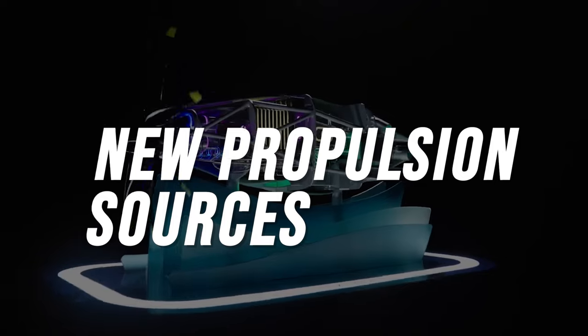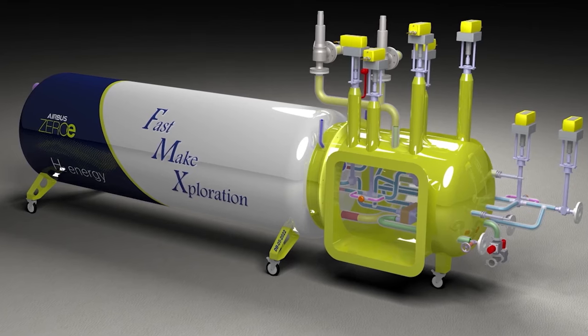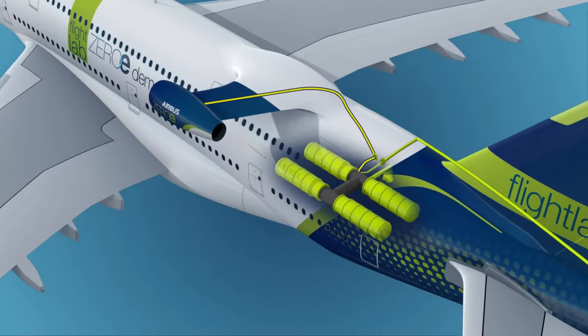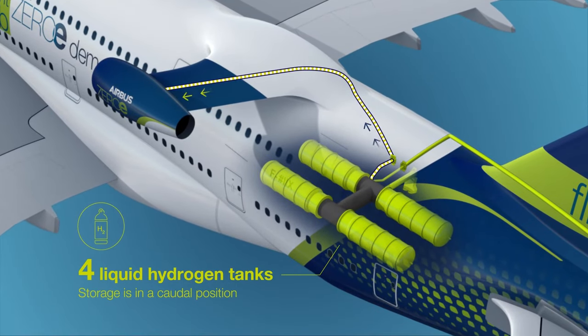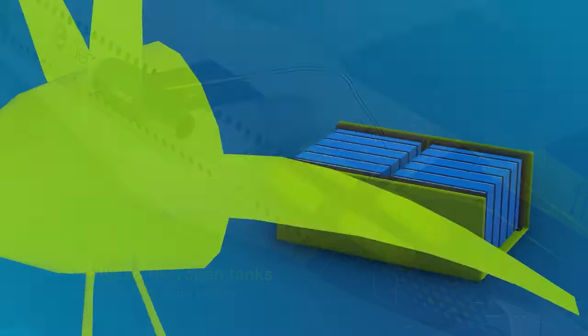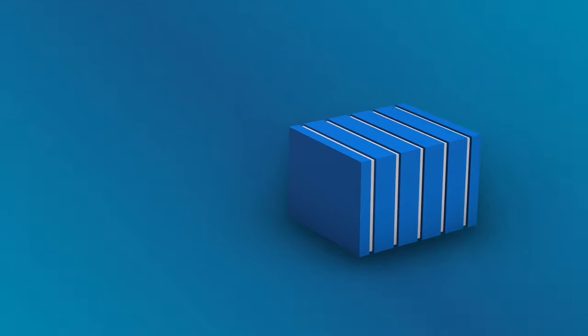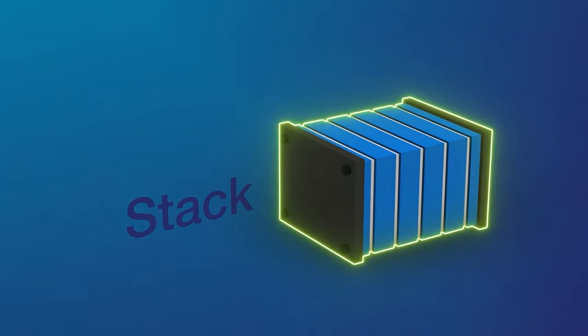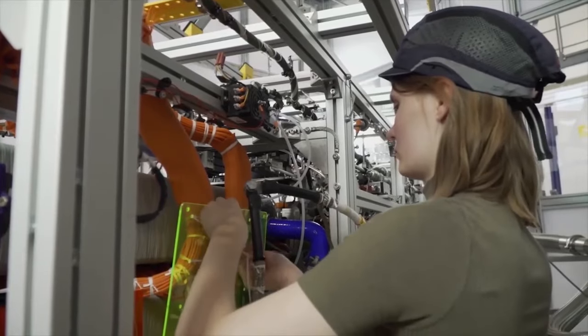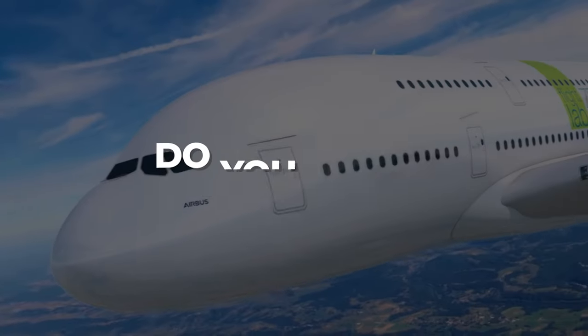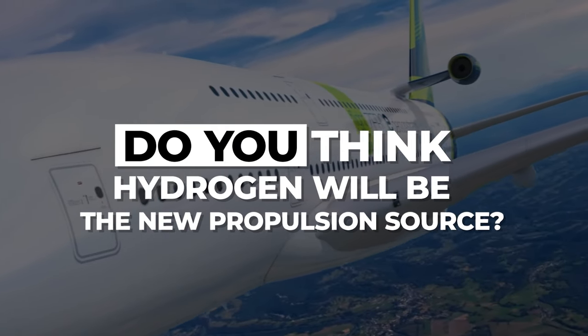New propulsion sources. Another exciting area is the use of hydrogen as a potential sustainable propulsion source. Currently, there are two main designs for hydrogen propulsion in airplanes: using the gas directly or using fuel cells that produce energy through catalysis. While we don't yet have fuel cells capable of storing enough energy to take off an airplane, research in this field promises exciting advances for the future of sustainable aviation. Do you think hydrogen will be the new propulsion source? Leave your opinion in the comments.